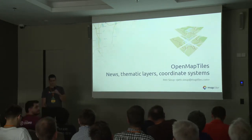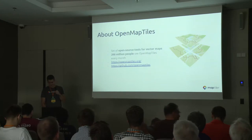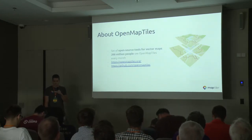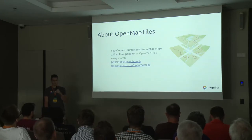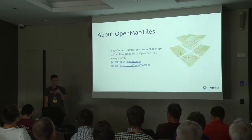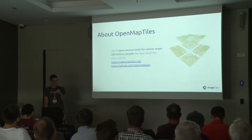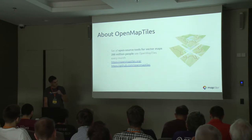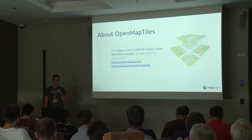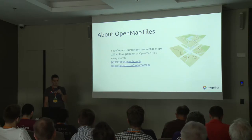For those of you that don't know, OpenMapTiles is a set of open source tools for creating and working with vector tiles and vector maps. It is estimated that more than 200 million people see OpenMapTiles somewhere on the web or in mobile applications every month, because companies like Carto, Elastic, or even NASA are using it in their products. The whole thing is open source — you can go to the website or to the GitHub to look at the source code and documentation.